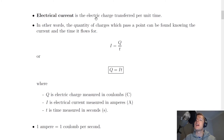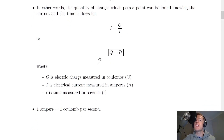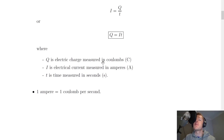Because electrical current is the electric charge transferred per unit time, and 'per' means divided by, current I equals charge Q divided by time T. Rearranging gives Q equals IT, which is the equation on the relationship sheet in the exam. Q is electric charge measured in coulombs (C), I is electrical current measured in amperes or amps (A), and T is time measured in seconds.